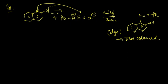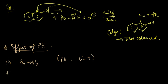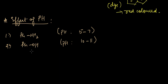Now let's discuss the effect of pH on these two compounds. First, we react aniline with diazonium chloride in the pH range of 5 to 7. Second, we react phenol with the diazonium salt in the pH range of 10 to 11.